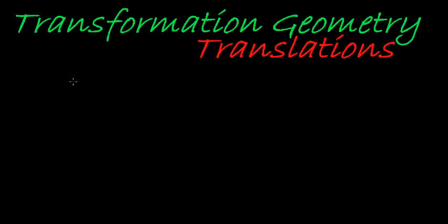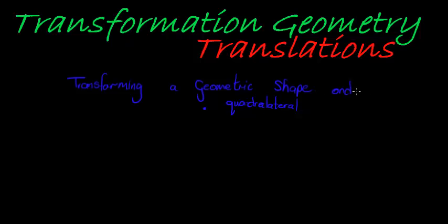What do we mean by geometric transformations? All that simply means is that we are transforming a geometric shape. Now a geometric shape can be as simple as a dot or it can be any quadrilateral. A geometric shape as simple as a dot or any complex quadrilateral shape on the coordinate plane.